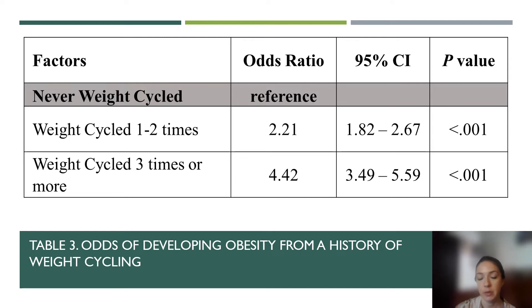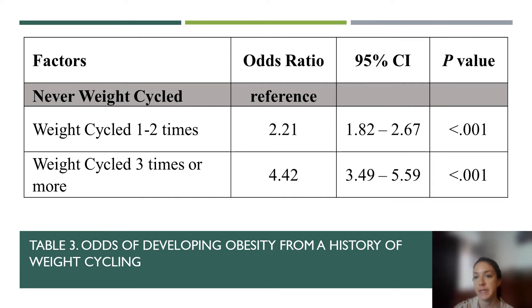I performed a simple logistic regression to examine the odds of developing obesity from a history of weight cycling. Compared to people who have never weight cycled, people who weight cycled one to two times were two times as likely to develop obesity, and people who weight cycled three times or more were four times as likely to develop obesity. Both of these odds ratios were significant, as shown by the 95% confidence intervals and the p-values.